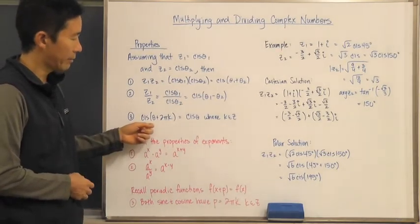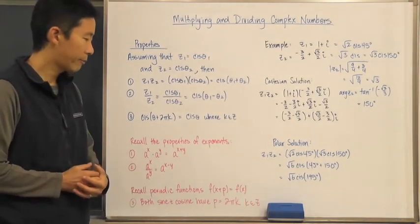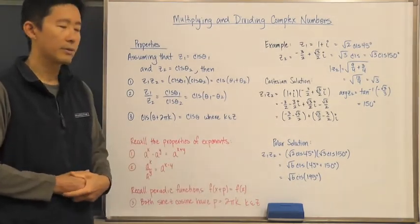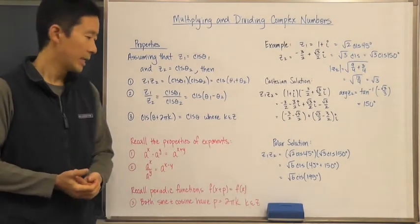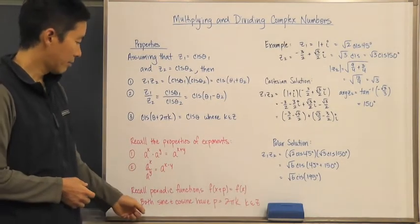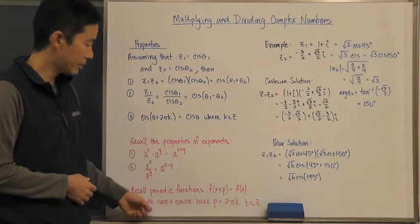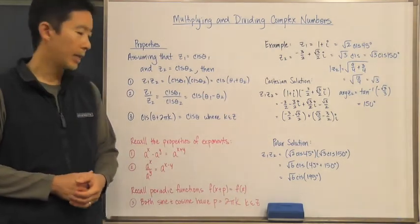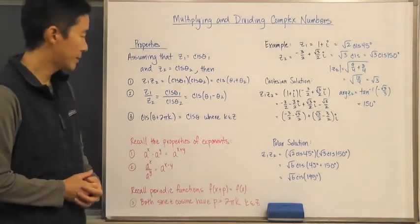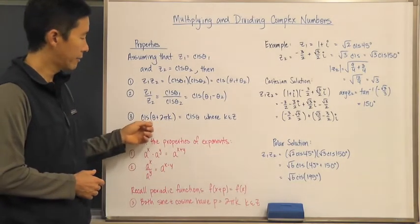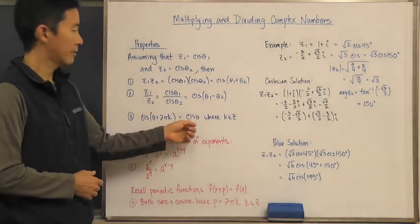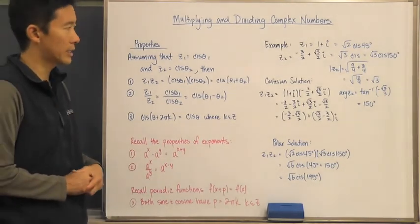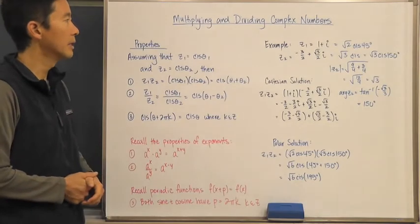For property three, we just have to recall the property of periodic functions: f(x + p) equals f(x) so long as the period is p. We know that cis represents sine and cosine, and both of those functions have a period of 2πk where k is an element of ℤ. Therefore, cis of θ plus 2πk can simply be written as cis θ.